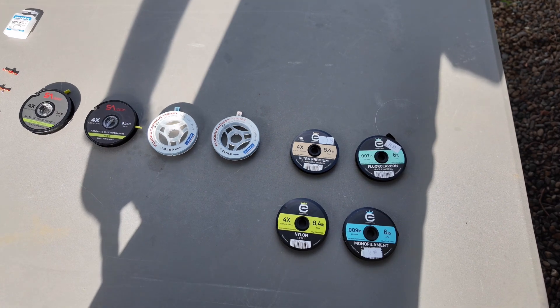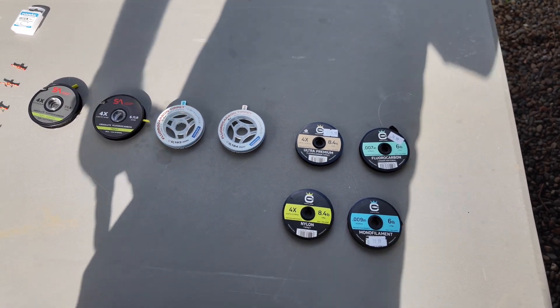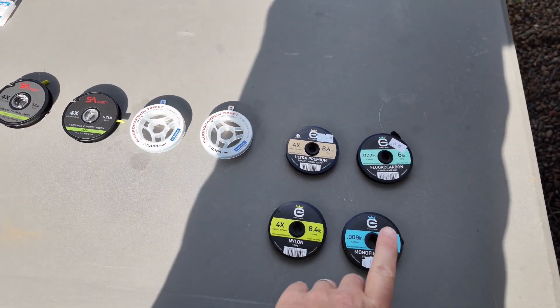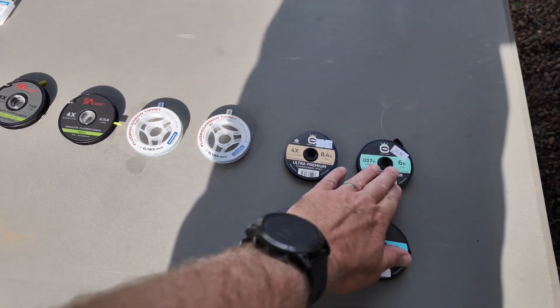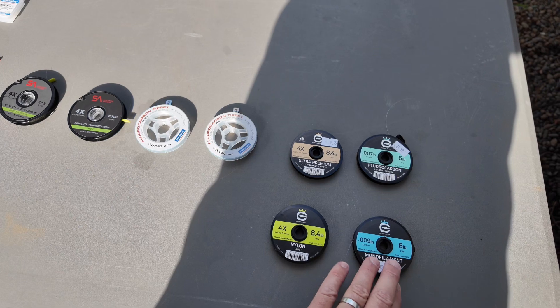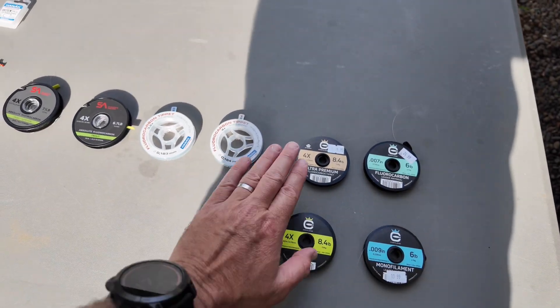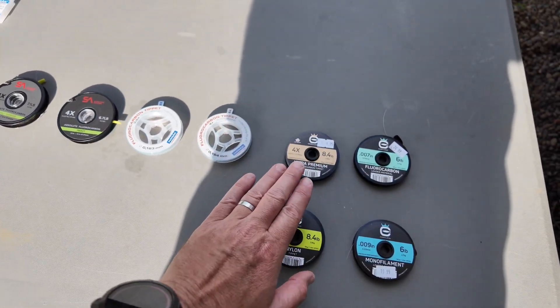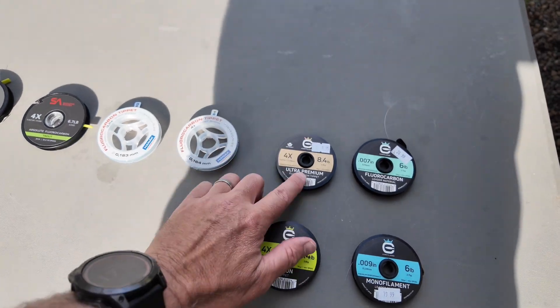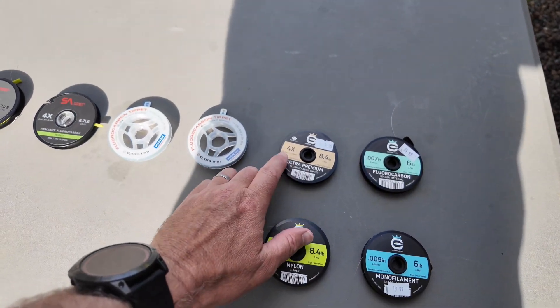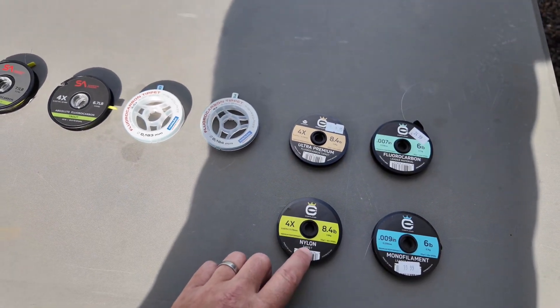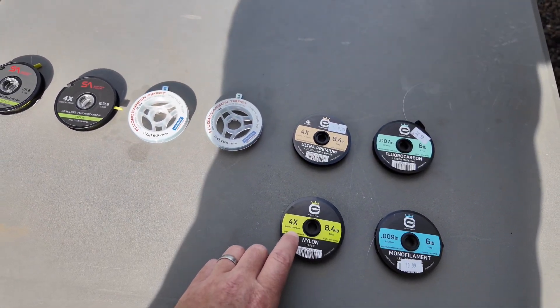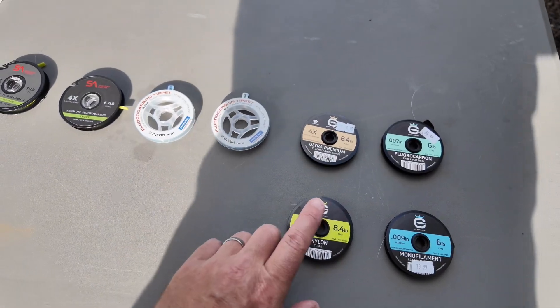So this is going to be the mother of all tippet tests number two. I don't feel like I gave Cortland a proper go in the first version because I just had some generic fluorocarbon 6 pound and monofilament 6 pound. I didn't realize there was maybe a higher grade of Cortland available, so I've got the ultra premium 4X which is 0.178 millimeters and the equivalent nylon 0.178.